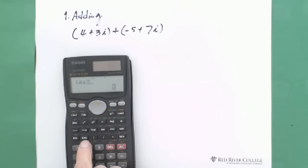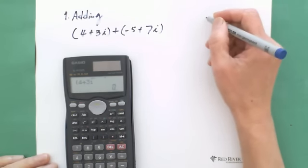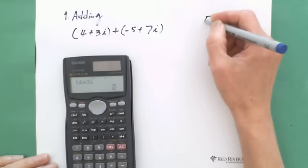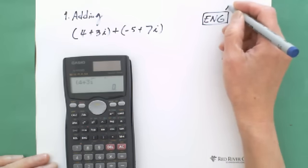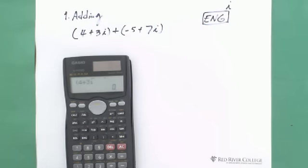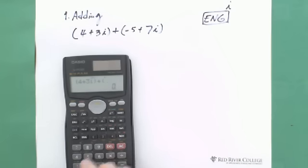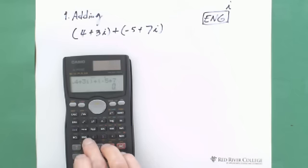So let's do bracket 4 plus 3i. The i button is ENG button. Because we're already in complex mode, you don't use the shift button. Just hit this one. So for the i button, you just go to complex number portion, ENG button. This is at the corner where they have the purple color i. And plus -5 plus 7i. Hit this button again.